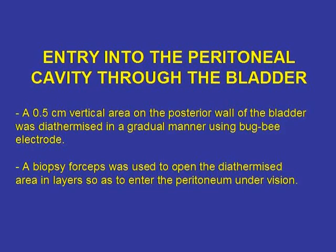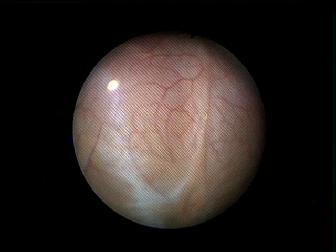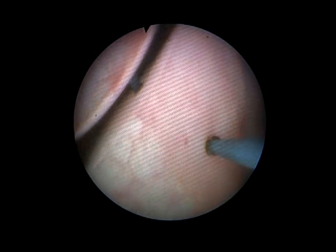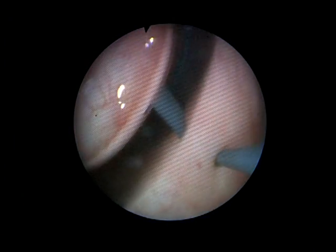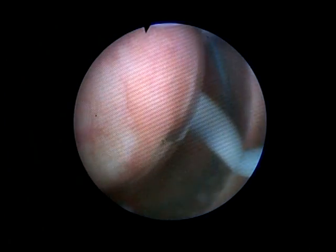Before the start of the bladder incision, the bladder was emptied and 100 cc's of glycine solution was instilled. The air bubble was used as a landmark as the bubble extended from the dome to the posterior bladder wall.